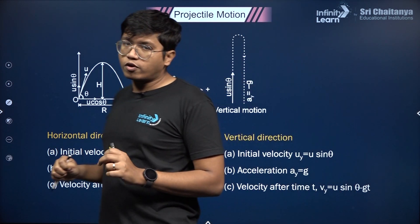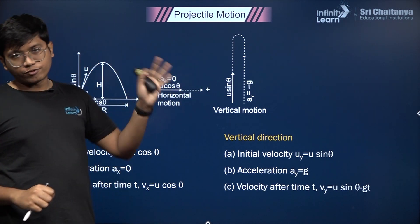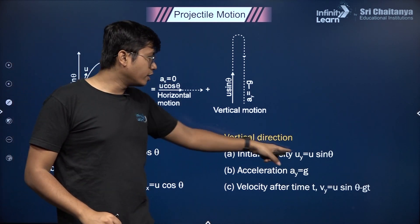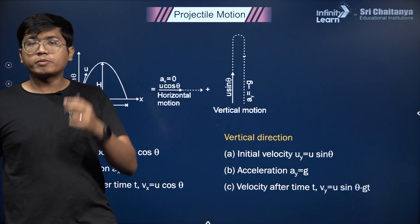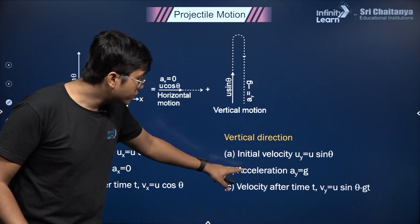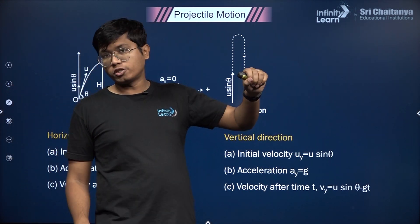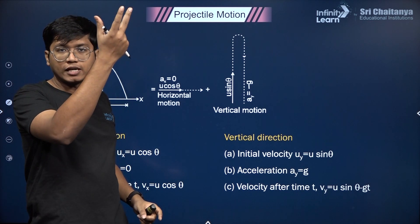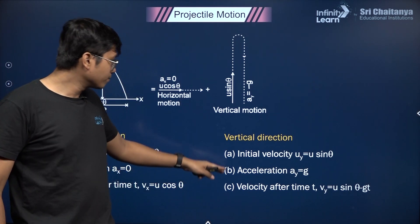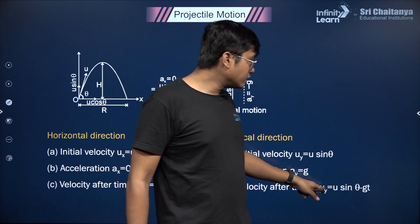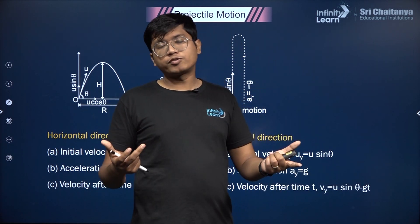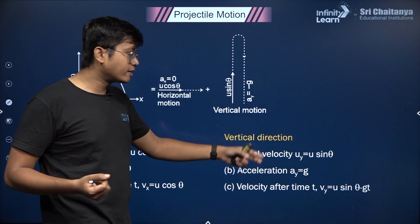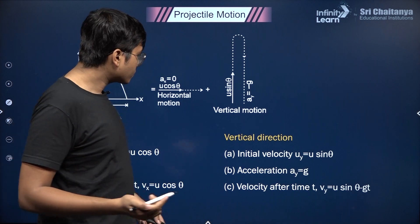For the vertical motion it's a different story because the launch speed is u sin θ, the sin θ component. But here you have acceleration because gravity is pulling on that particle downwards. So the acceleration is the acceleration due to gravity, and because of that, u sin θ when you launch is the same as if you throw a particle vertically up—it's the exact same case. Which means velocity after time t, vᵧ = u sin θ - gt. This comes from v = u - at, just replace u with u sin θ and a with g.